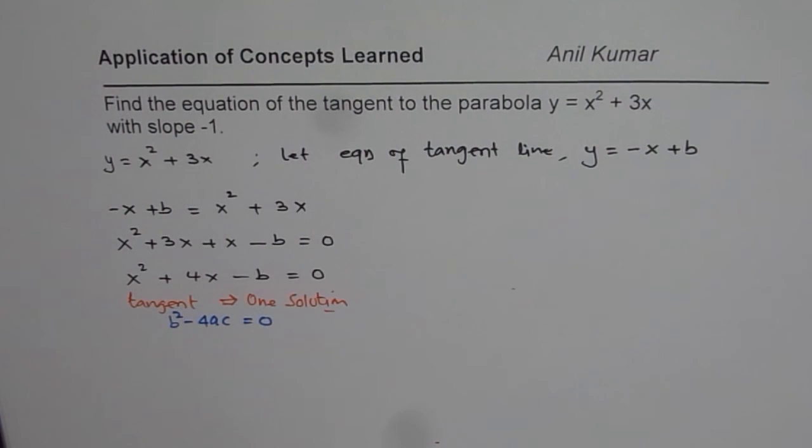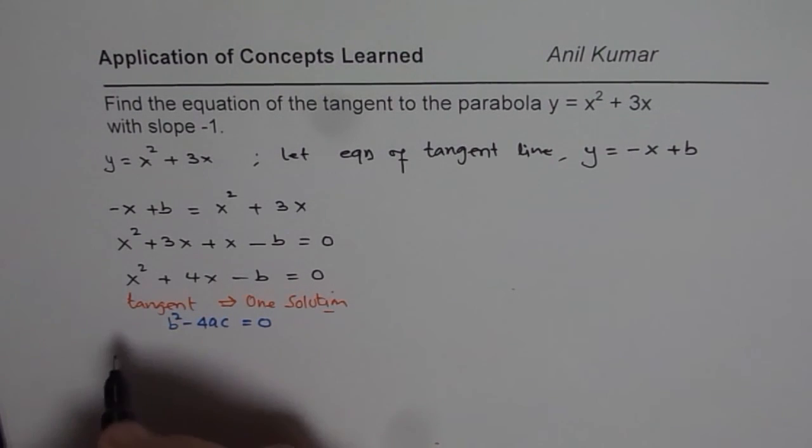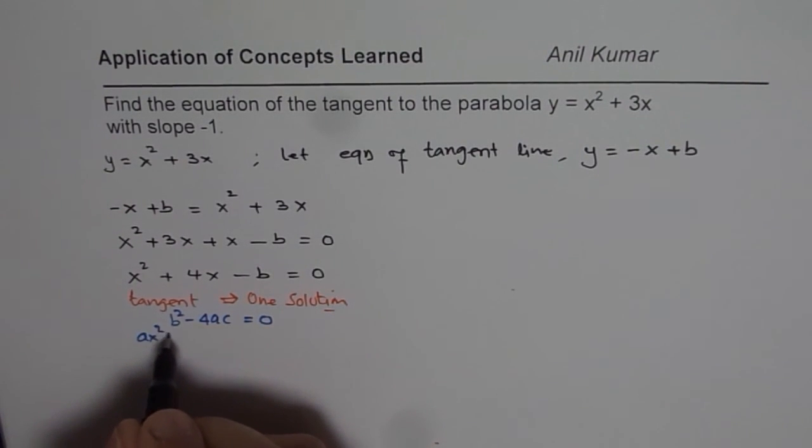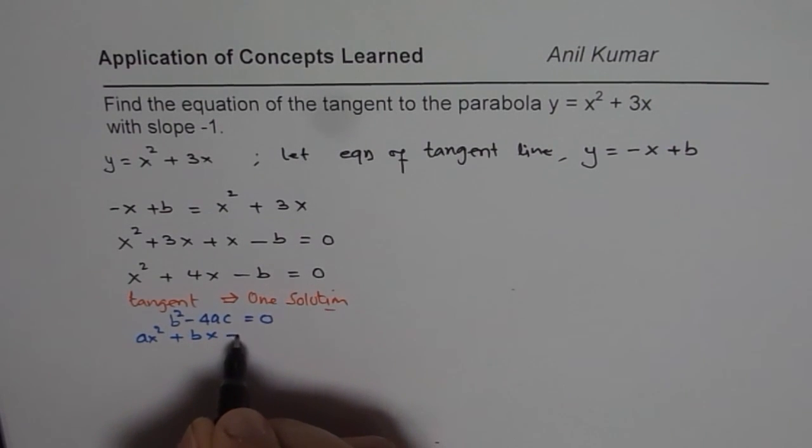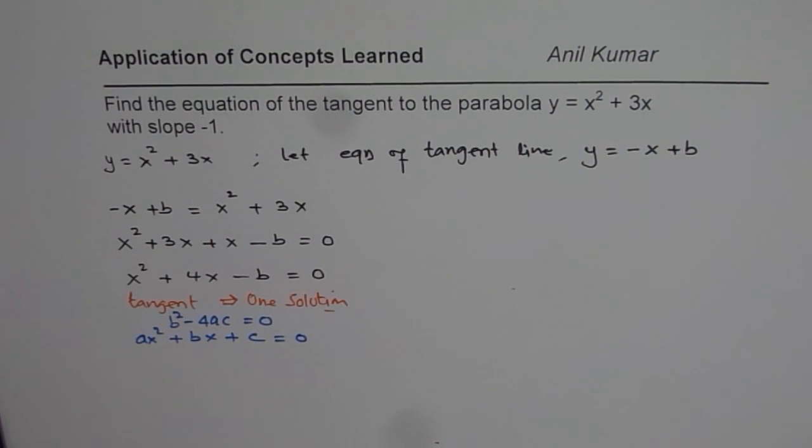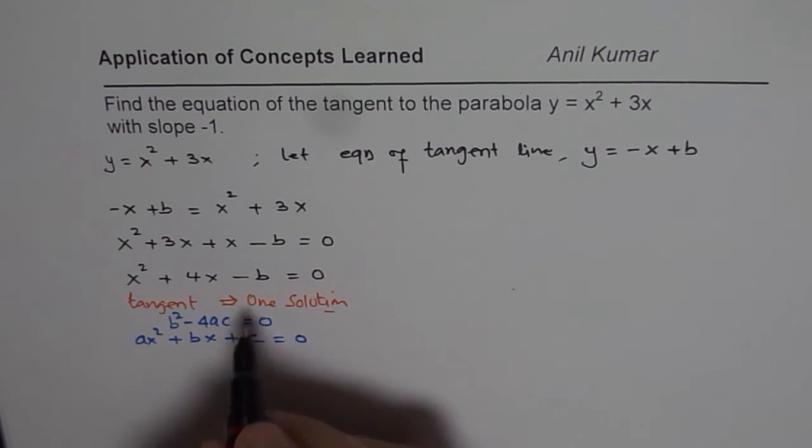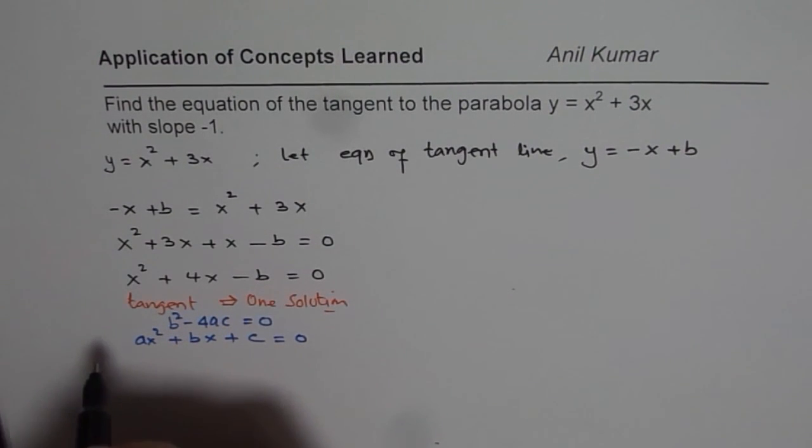So, that is the concept which we are going to use in this particular equation. When I say b square minus 4ac, I am looking at the equation as ax square plus bx plus c, right, equals to 0. So, that is the equation which I am looking at, right? So, you should not confuse with these two b's together, right?